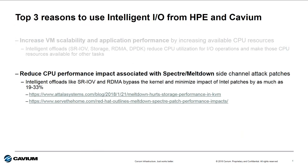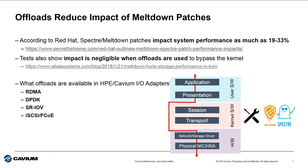Second, these same offloads allow the IO transactions to bypass the kernel and thus reduce performance impacts that could be attributed to the Spectre and Meltdown patches customers have to implement on x86 servers. When Intel patches are applied for Spectre and Meltdown, the performance of the server can be impacted. Testing by Red Hat shows that the impact could be as much as 19 to 32% degradation in high-performance systems.